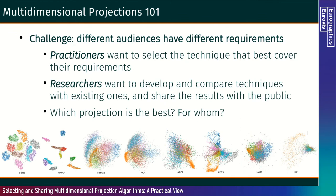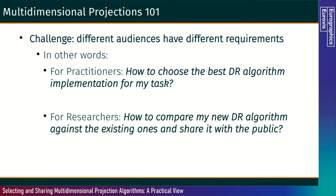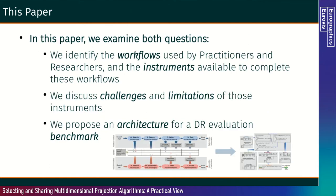The challenge is that different audiences have different requirements for multidimensional projections. The practitioners, or users, want to select the technique that best covers their requirements, whereas the researchers want to develop and compare techniques with existing ones and share the results with the public. Which projection is the best, and for whom? For practitioners, the question is: how to choose the best DR algorithm implementation for my task? For researchers, the question is: how to compare my new DR algorithm against existing ones and share it with the public?